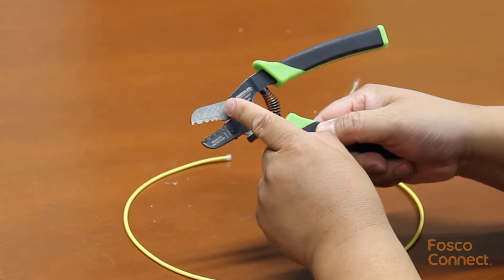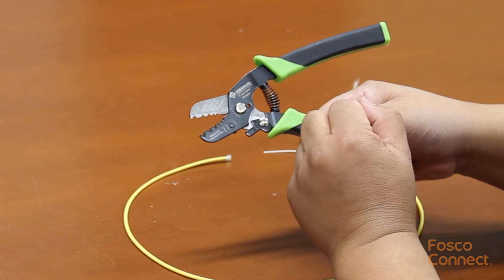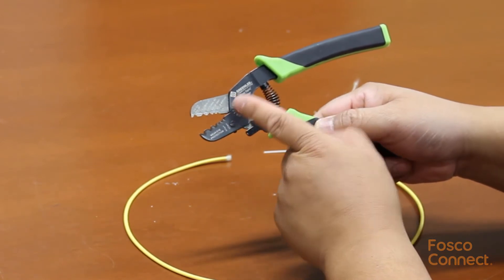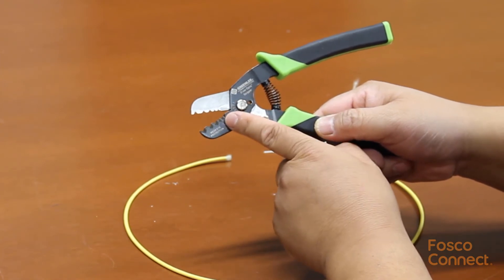The third notch says 2 to 2.4mm outer jacket. The fourth says 900-micron buffer only, which can strip away 900-micron buffer without touching the inner 250-micron acrylic coating.